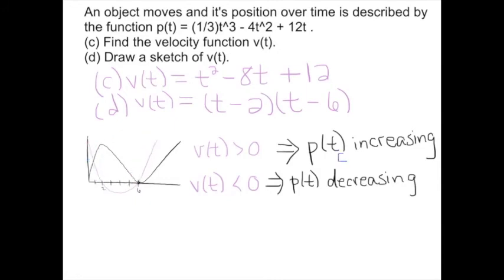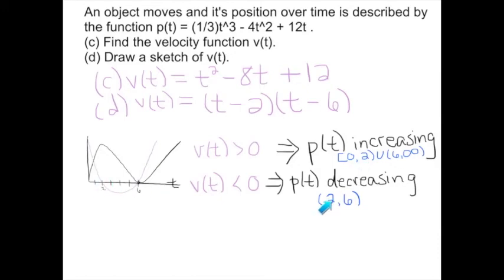In interval notation, the position is increasing from 0 to 2, and also from 6 to infinity. The position is decreasing from 2 to 6. At t = 0, the position is immediately increasing. At t = 2 and t = 6, the velocity is 0 — the position is neither increasing nor decreasing — so these endpoints are excluded from the open intervals where the position is strictly increasing or decreasing.